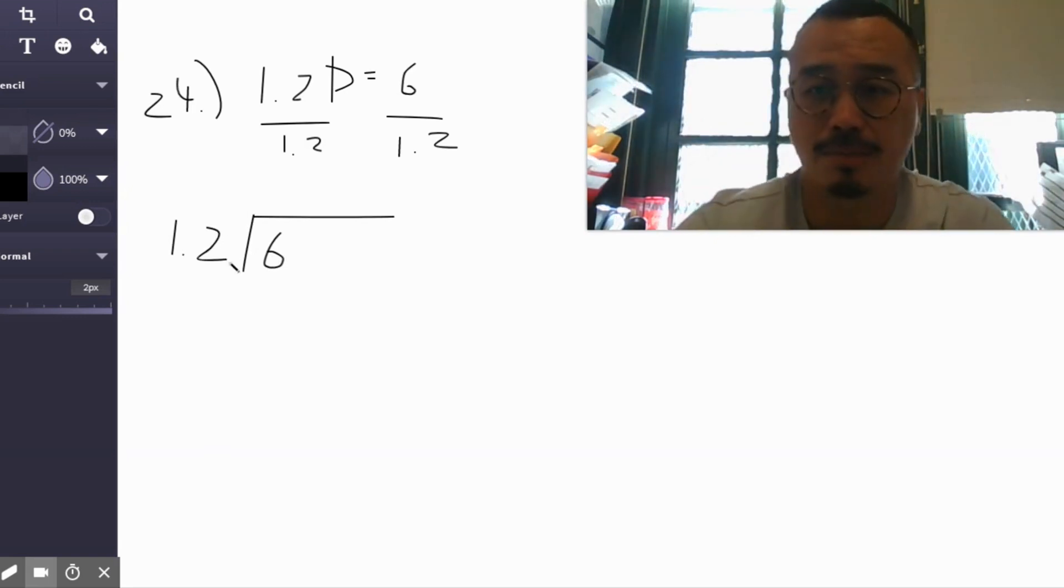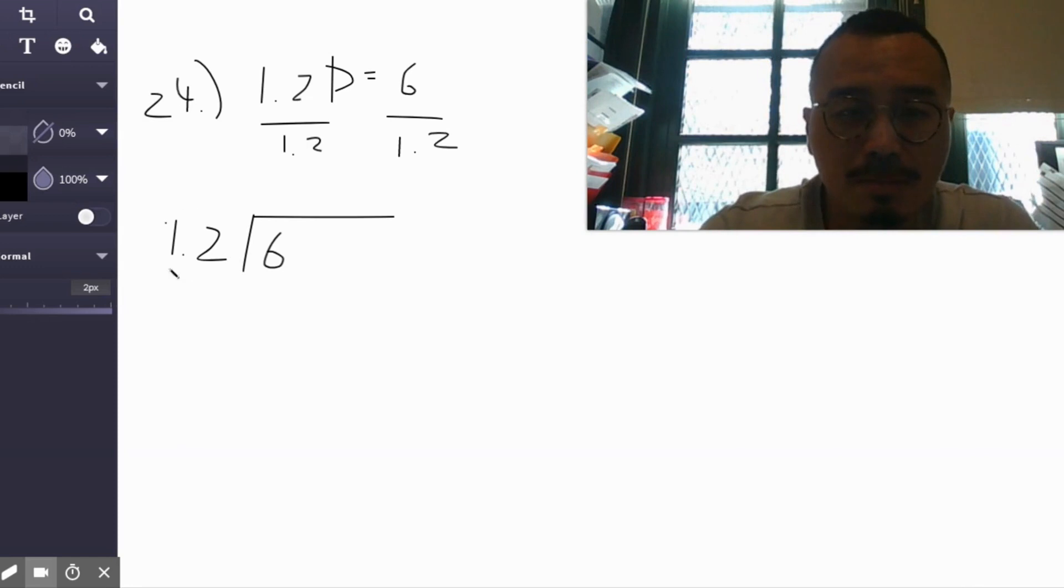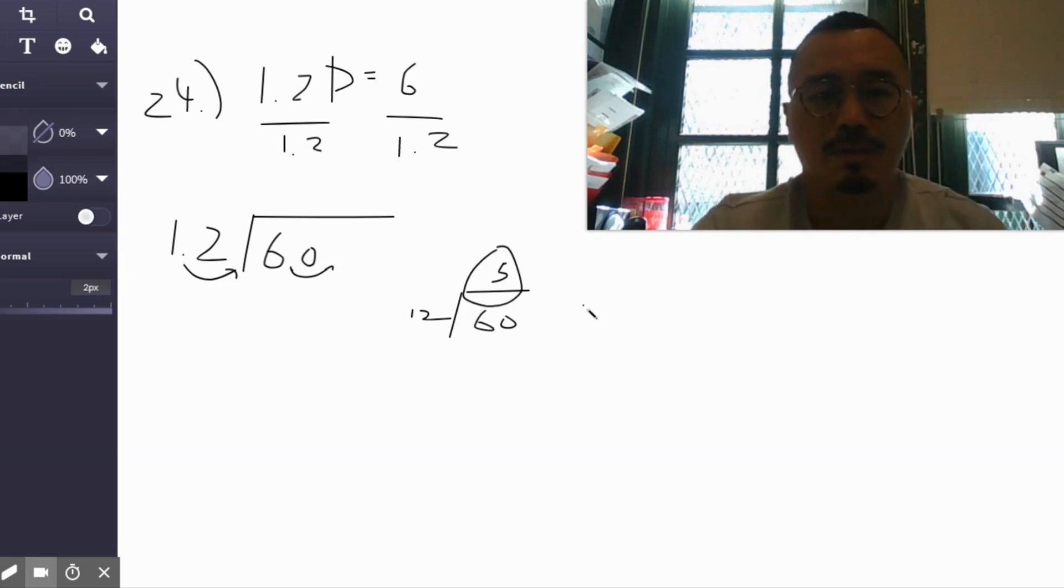Now remember, you don't want decimals on the outside. You don't want the divisor to be a decimal, so you move it once. Same thing here—since there's nothing here, you move this once. So now in effect you have 60 divided by 12, which means five times.